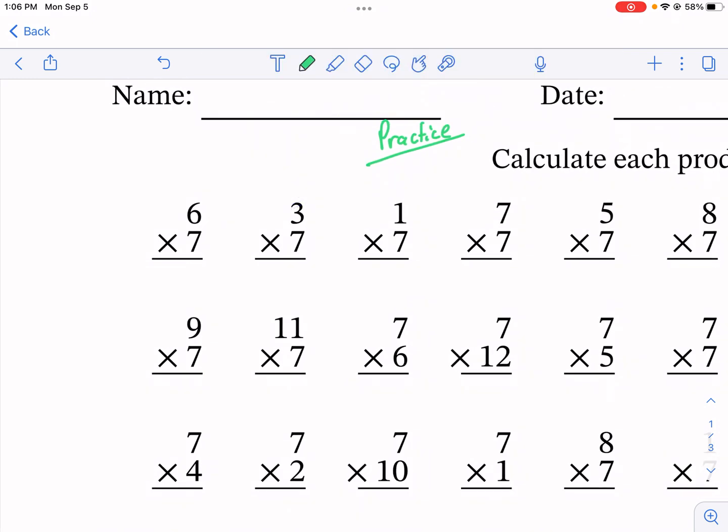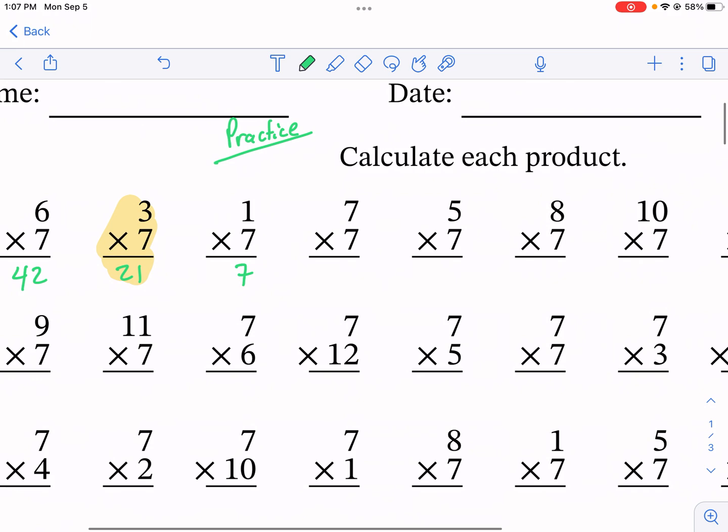So we have 6 times 7. So if you had 6 touchdowns, each one with the extra point being 7, that would take you to 42 points. 7 times 3, this is a big one. You're going to want to remember this one. 7 times 3, 21. Definitely have that memorized. And then this is an identity principle, so we have 7.